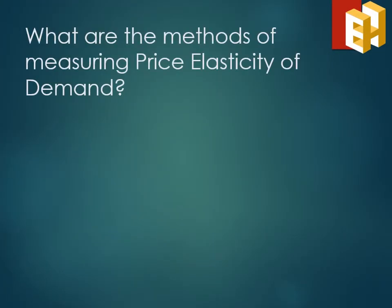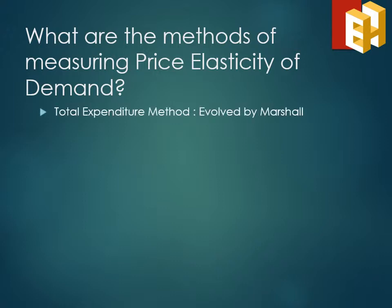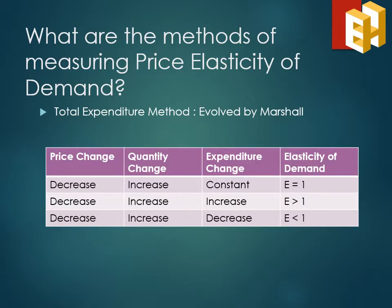The third method is the total expenditure method, given by Alfred Marshall. It says that if with a decrease in price the expenditure remains constant — that is, change in price equals change in quantity — then elasticity equals 1. If with a decrease in price expenditure increases, it means consumers are induced to buy more goods, implying change in quantity is greater than change in price, so elasticity is greater than 1. Lastly, if a price decrease leads to a decrease in expenditure, it implies there is not much change in quantity demanded, so change in quantity is less than change in price, hence elasticity is less than 1.